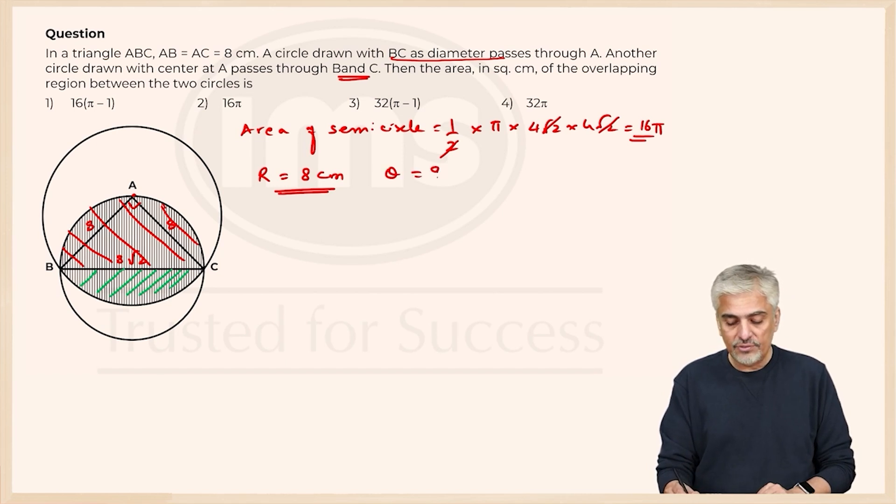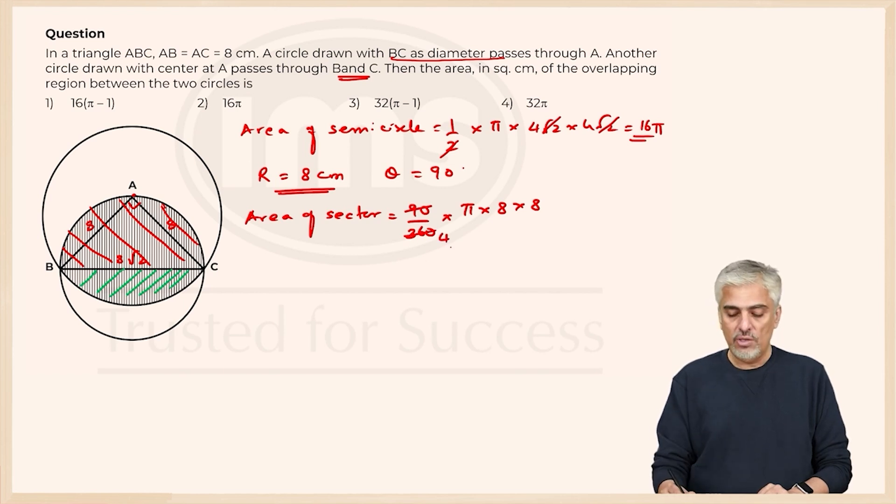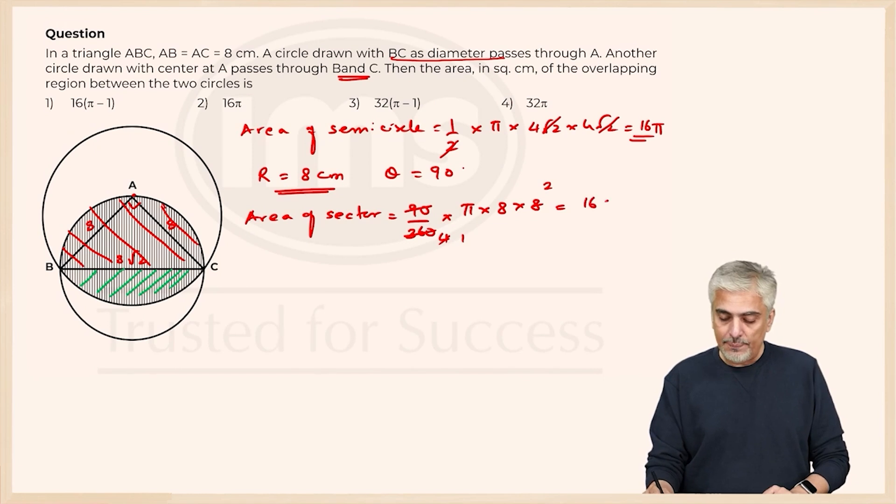My theta for the sector will be 90 because angle at point A is where the sector is. So what will it be? Area of the sector minus area of the triangle. So what will be area of sector? Theta upon 360 into pi into r square. 90 will go 4 times. 4 ones are 4, 2s are... So that will become 16 pi. So area of the sector became 16 pi.